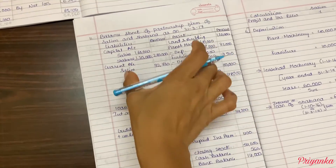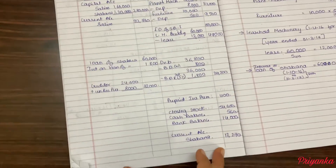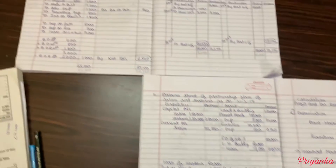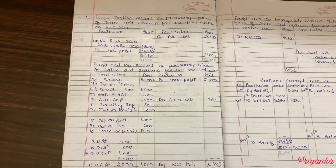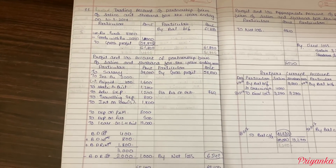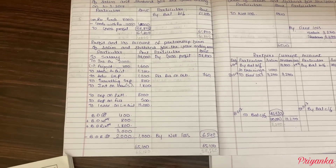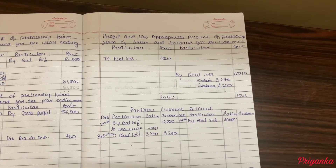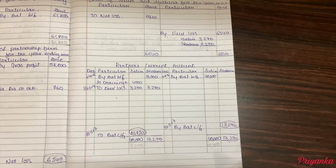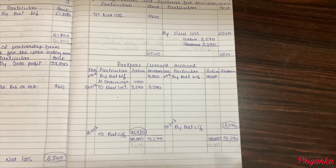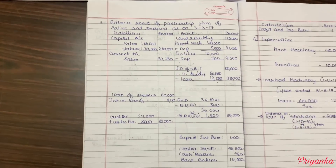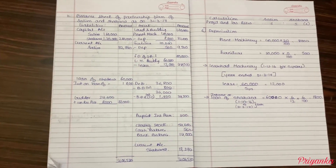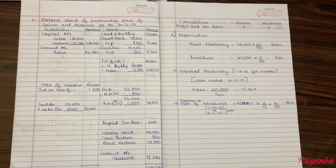Now the last process: make the total of both sides and find it out. Just take the last look: trading account, profit and loss account, profit and loss appropriation account, partners' current account, and balance sheet with calculation. We are done.